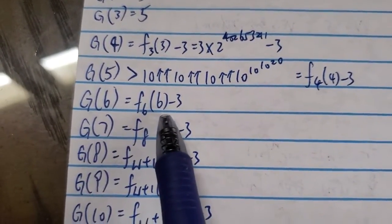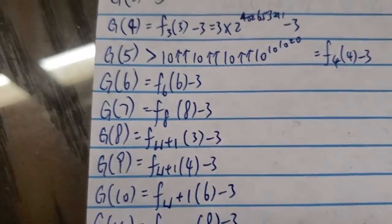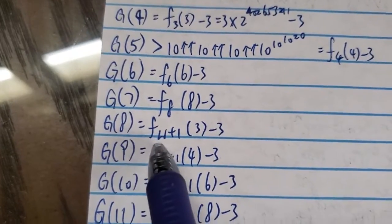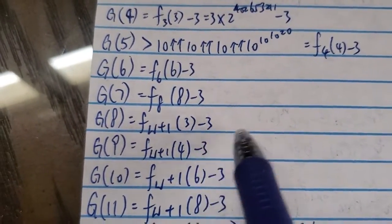And for number 6, it takes this many. And f here is the fast-growing hierarchy. And then for g of 8 here, it's already f of omega plus 1, 3 minus 3.